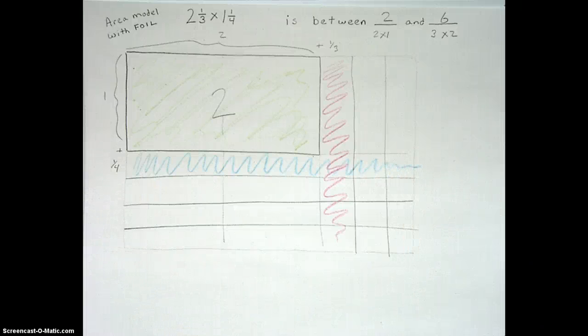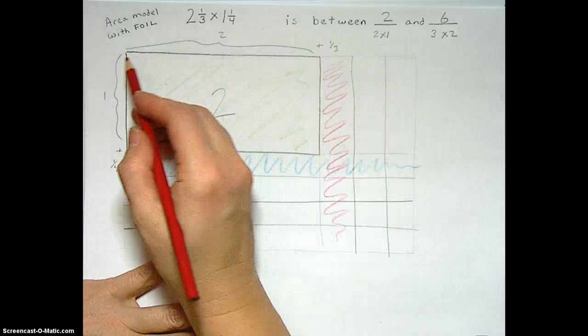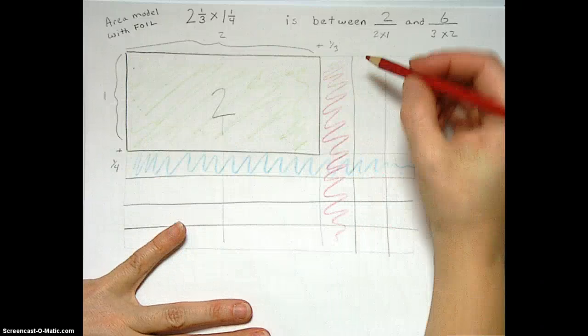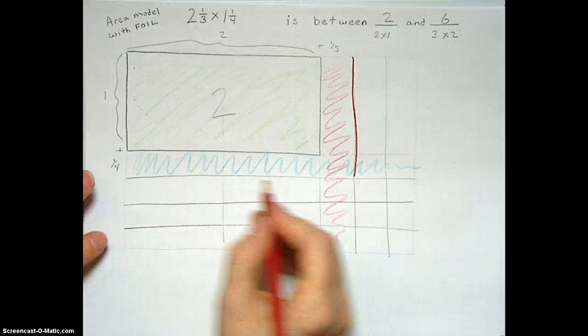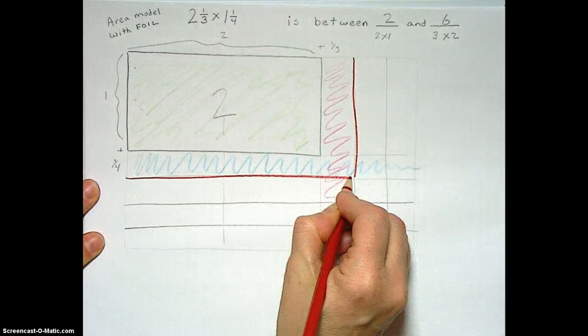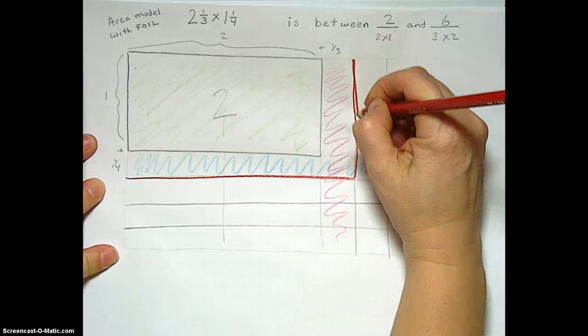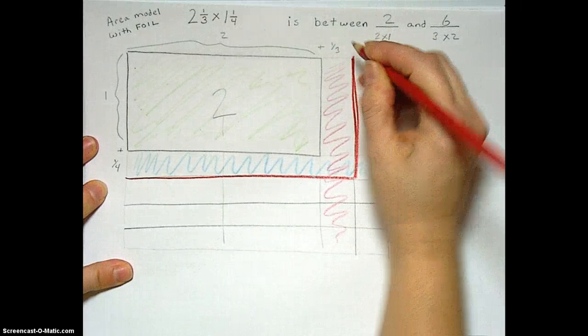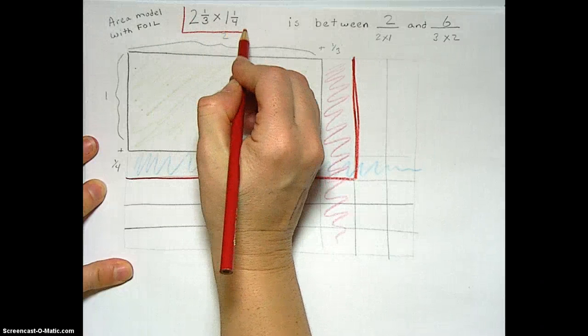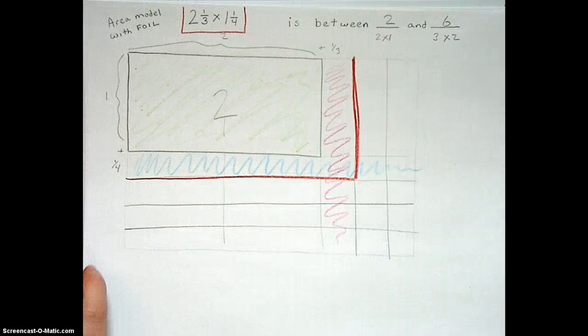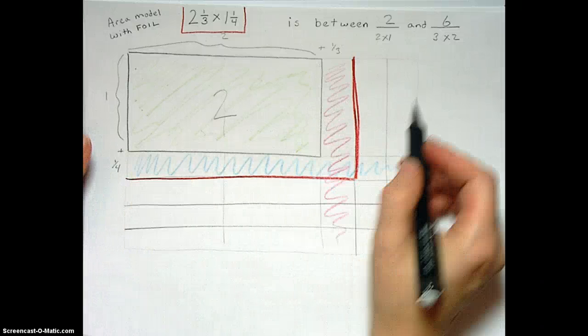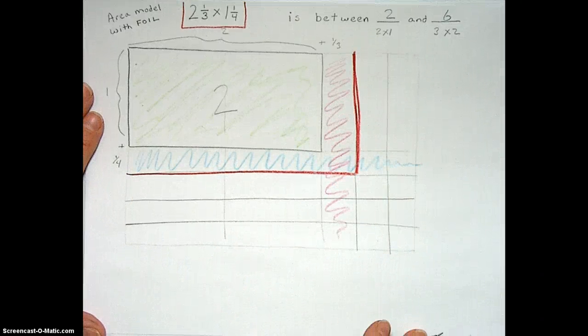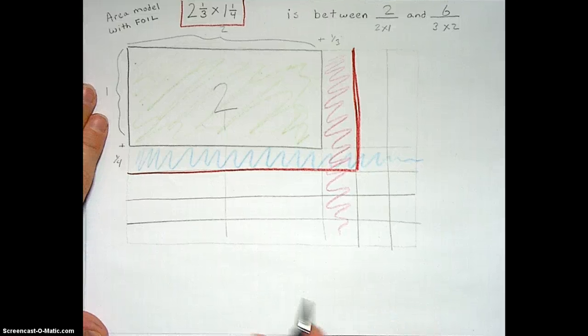And then we know that the thing we're actually looking for is the area that is 2 and 1/3 wide by 1 and 1/4 tall. So let's mark off our actual true area model for this product. A 2 and 1/3 by 1 and 1/4 marked in by the red. Now we're going to find the exact product, which we know is between 2 and 6. Let's do that using foil.